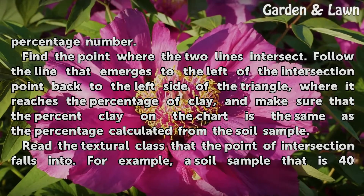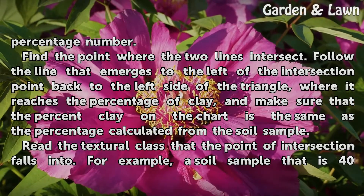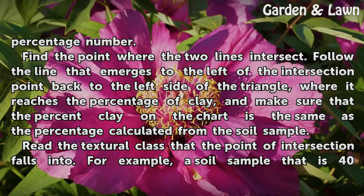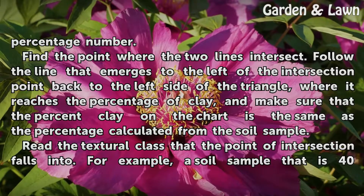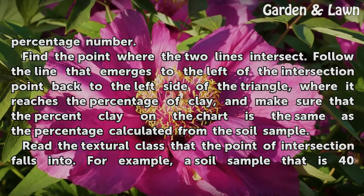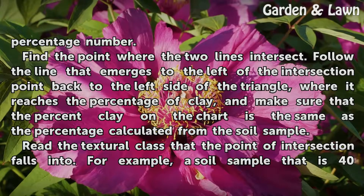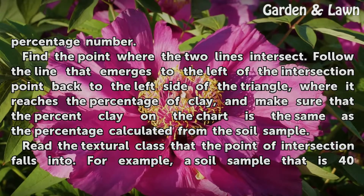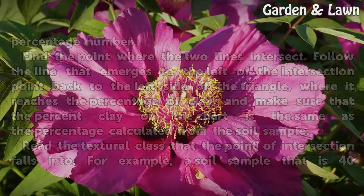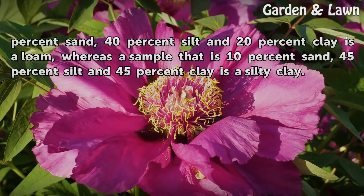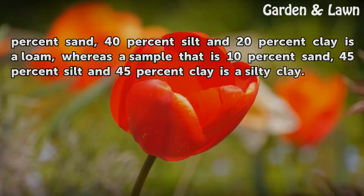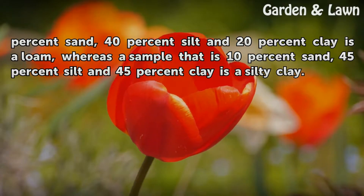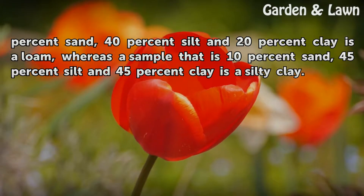Follow the line that emerges to the left of the intersection point back to the left side of the triangle, where it reaches the percentage of clay, and make sure that the percent clay on the chart is the same as the percentage calculated from the soil sample. Read the textural class that the point of intersection falls into. For example, a soil sample that is 40% sand, 40% silt, and 20% clay is a loam, whereas a sample that is 10% sand, 45% silt, and 45% clay is a silty clay.